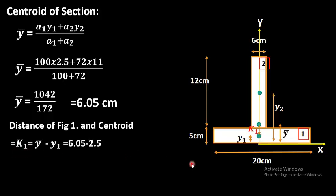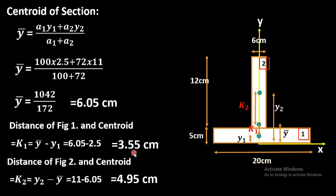Now, k1 is the distance between the centroid of figure 1 and the combined centroid of the whole figure. It equals y-bar minus y1, which gives k1 = 6.05 − 2.5 = 3.55 cm. Similarly, k2 is the distance between the combined centroid of the whole figure and the centroid of the second region. It equals y2 minus y-bar: k2 = 11 − 6.05 = 4.95 cm.